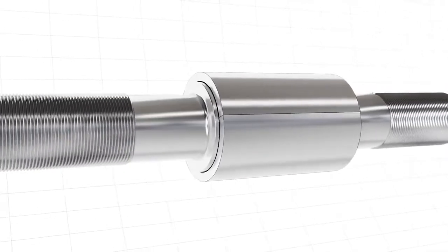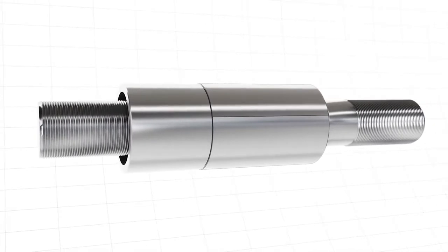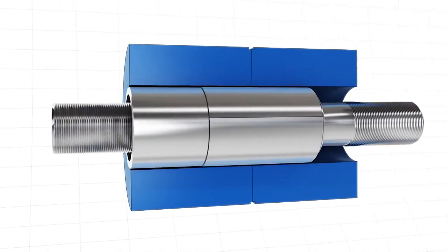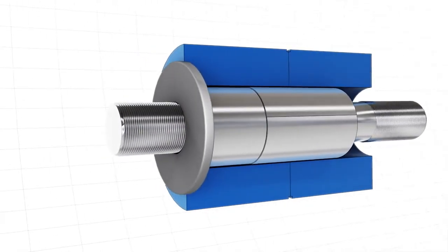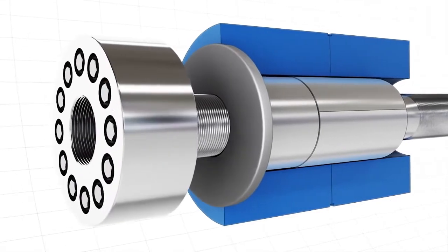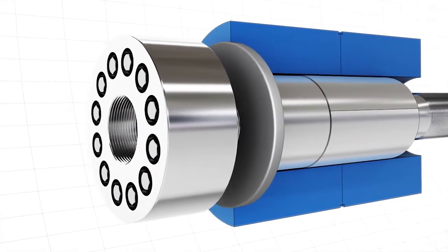To install a Superbolt Expansion Bolt, the split tapered sleeve is placed over the tapered stud and inserted into the bore. On side A, the spacer and Multi-Jack Bolt tensioner are installed. This pulls the tapered stud into the expanding sleeve and generates a radial force.